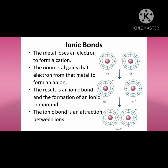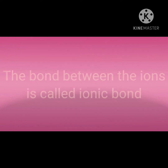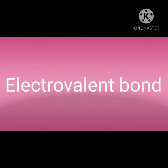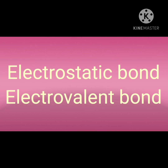As this bond is between charged particles known as ions, it is called an ionic bond — the bond between the ions. Sometimes, based on the forces being electrostatic, the bond is also called an electrostatic bond. As the valence concept has been explained in terms of electrons, it is also called an electrovalent bond. So, an ionic bond is also known as an electrostatic bond and an electrovalent bond.